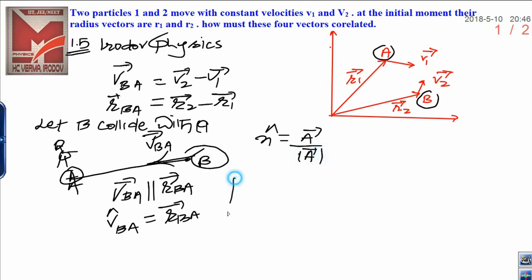Now, simplify this result by this way. It will be v2 minus v1, which is the value of vBA, divided by magnitude of v2 minus v1 vector.